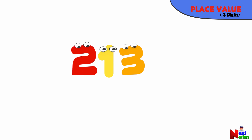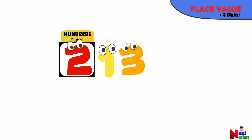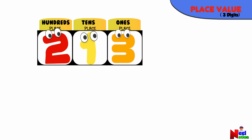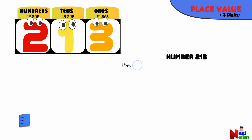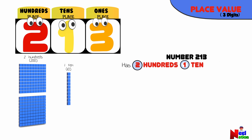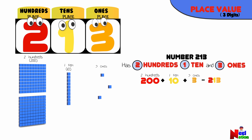Here is how place value works in a three-digit number. In a three-digit number, the leftmost digit represents the hundreds place, the middle digit represents the tens place, and the rightmost digit represents the ones place. In the number 213, the digit 2 is in the hundreds place and its place value is 200. The digit 1 is in the tens place and its place value is 10. And the digit 3 is in the ones place and its place value is 3. So 200 plus 10 plus 3 makes a total of 213.